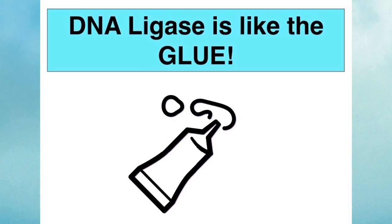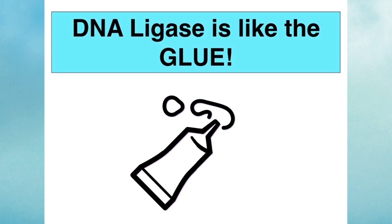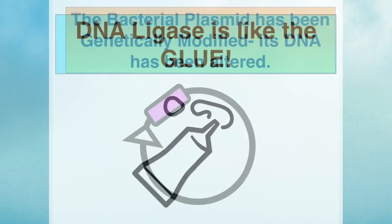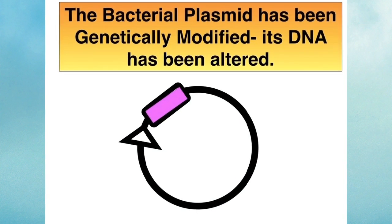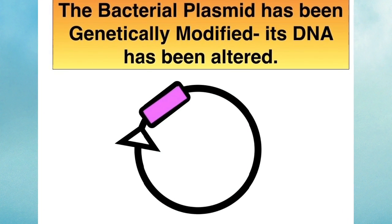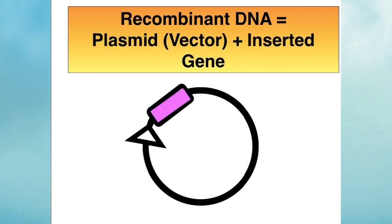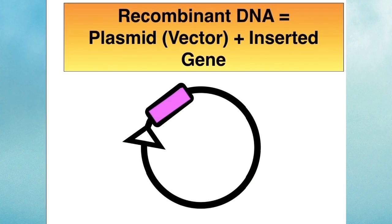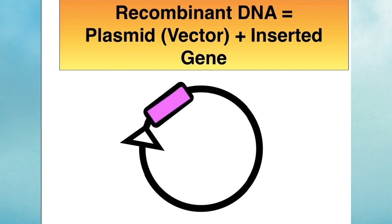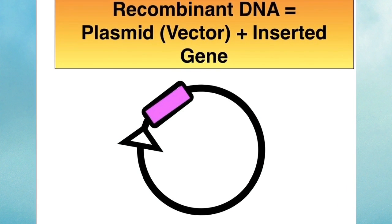Just imagine DNA ligase, that enzyme, it's like the glue that's going to stick the new DNA into the plasmid and seal it all up as one. That bacterial plasmid has been genetically modified, its DNA has been altered. This is now recombinant DNA. Recombinant DNA refers to the DNA of the plasmid and the inserted gene now becoming one unit.